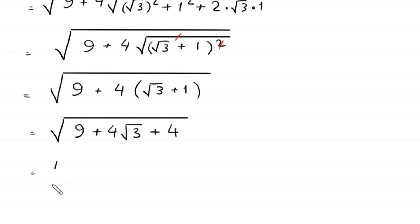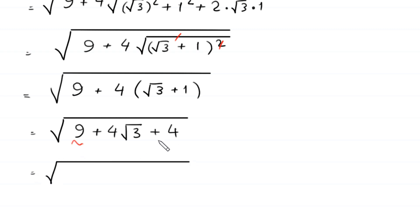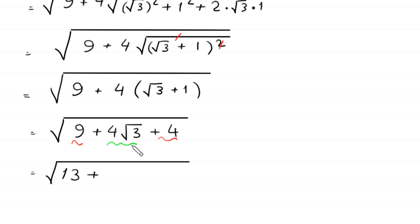Next, square root of — 9 plus 4 will become 13, plus this 4 times square root of 3 remains. And 4 times square root of 3 can be written as 2 times square root of 3 times 2.